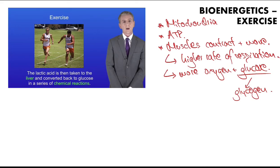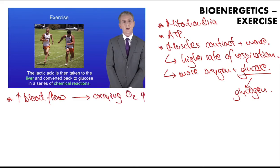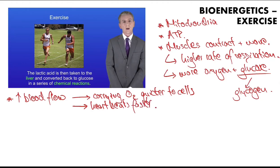To increase the rate of respiration and the amount of oxygen available, you need to increase blood flow, carrying oxygen quicker around the body and to the cells that need it. The way this happens is your heart beats faster — as your heart contracts and relaxes faster, it pushes oxygen quicker around the body.